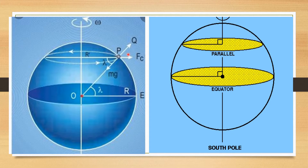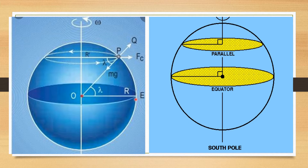Let us study this diagram. We have to find out the variation of g with the latitude. To study this part, we have to first understand what is meant by latitude. Latitude is the angle between the equatorial line and the radius vector. Here, this is point E, the angle is 0, this is the equatorial plane, and this is the radius vector.